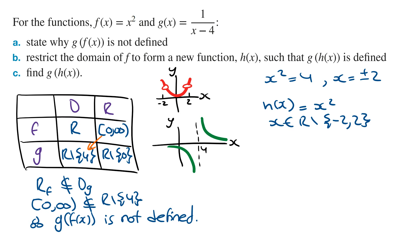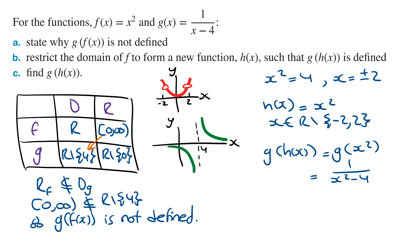Part (c): Find g∘h(x). g∘h(x) can be written as g(x²). Wherever there is an x in g(x), we replace it with x². So this gives 1/(x²−4). The domain of g∘h(x) is the domain of the inner function h(x), which is all real numbers except for −2 and 2.